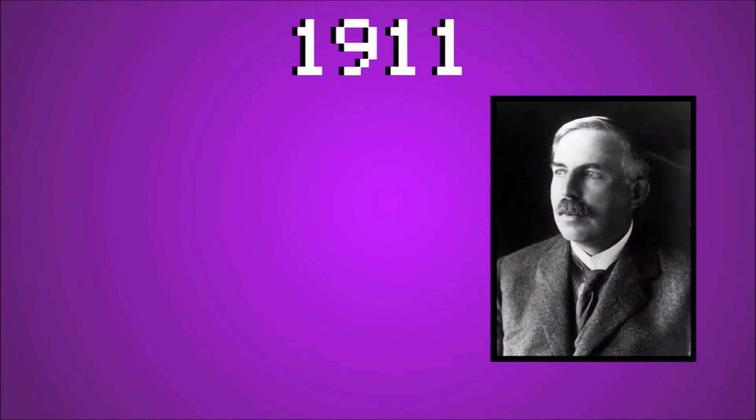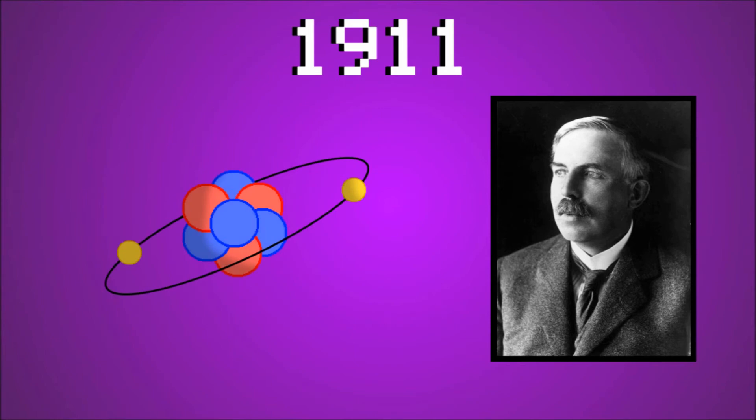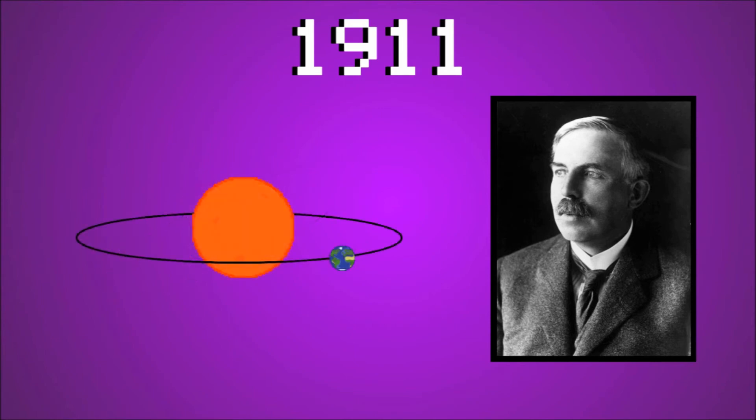In 1911, a student of Thompson's named Ernest Rutherford discovered a flaw in Thompson's plum pudding model. He discovered that atoms had a dense nucleus which held most of the mass of the atom. With this knowledge, he scrapped the plum pudding model and created a new model resembling a solar system, with the electrons orbiting around the nucleus much like planets around the sun.